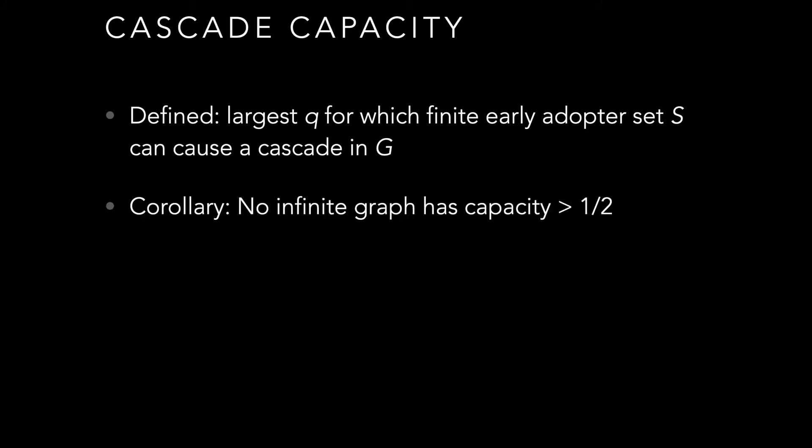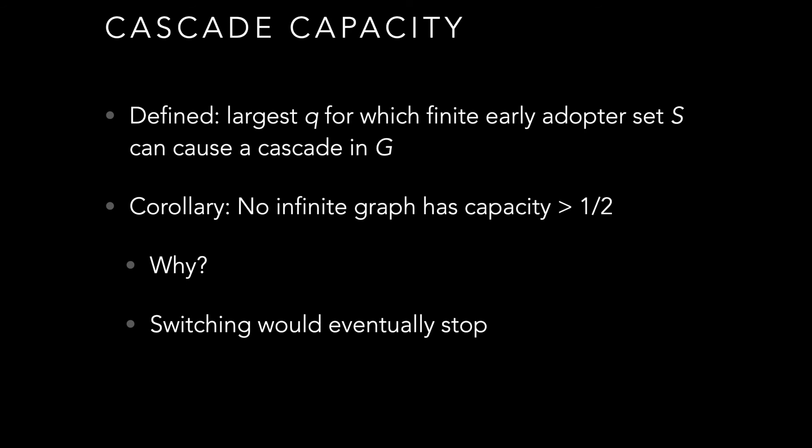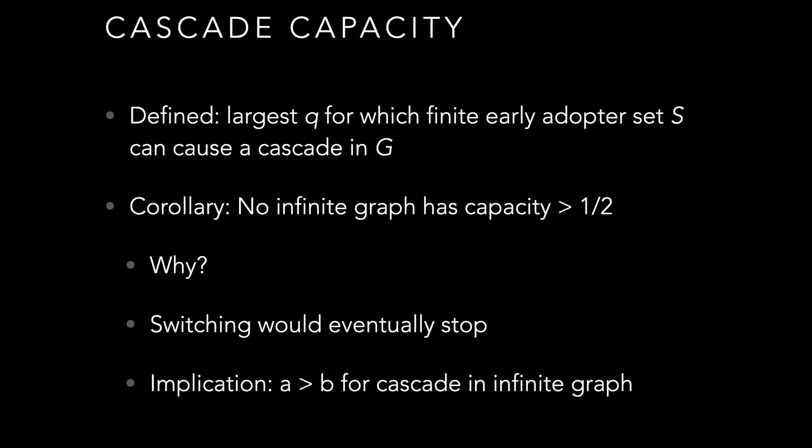Interestingly, if we look at infinite graphs or sufficiently large graphs, no graph has a capacity greater than one-half. This means no amount of early adopters can cause a cascade if the payoff for A is less than B. It turns out that even with a large set of early adopters in an infinite graph, any oscillation that may come about by a node choosing an option based on neighbors eventually stops as propagation ensues. This means in order for a cascade to occur in arbitrarily large graphs, the payoff for a particular option must be strictly larger than the payoff for the alternative.